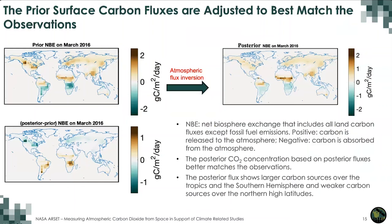This shows an example of the prior, posterior, net biospheric exchange (NBE), and their differences. The posterior NBE is the optimized surface carbon flux that best matches the observation. The NBE includes all land carbon fluxes except fossil fuel emissions. Positive values indicate carbon source to the atmosphere; negative values indicate land carbon sink. The difference between posterior and prior shows that the posterior fluxes have much larger source over northern Africa, weaker uptake over southern hemisphere middle latitudes, and weaker source over the northern hemisphere. Through the inversion process, we adjust the prior fluxes to best match observations.